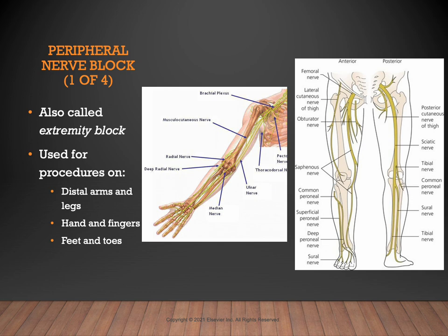Peripheral nerve block, abbreviated PNB — also called an extremity block — may be used for procedures of the distal arms, legs, hands, feet, fingers, and toes. They are more commonly used for upper extremity procedures; for most lower extremity surgical procedures, a spinal or epidural is preferred over multiple nerve blocks. The arm may be blocked at the brachial plexus, median, radial, or ulnar nerves. Blocks of the lower extremities can occur at the femoral, obturator, or sciatic nerves.